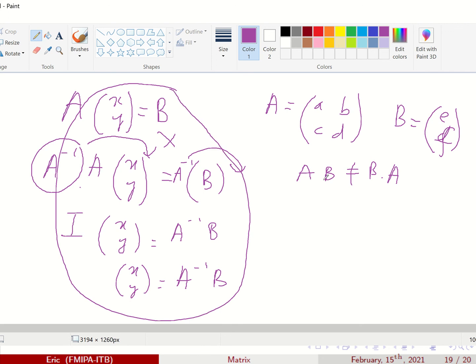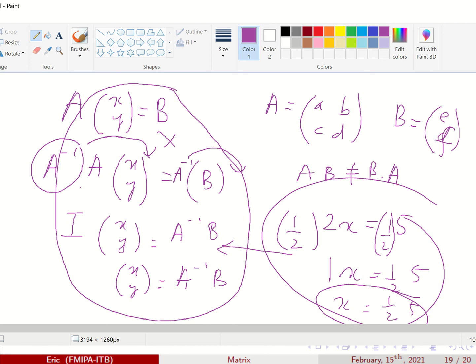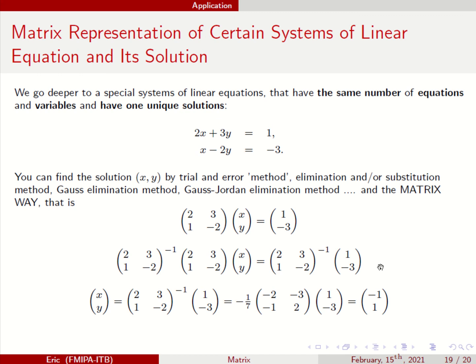And this method is the same as this. If you have 2x equals 5, how do I find x? You multiply it with the inverse of 2, the inverse multiplication of 2, that is a half. A half times 2 is 1 times x. A half times 5, 1 times x is x, a half times 5. So this is the same as this.